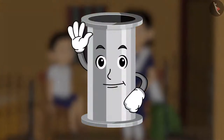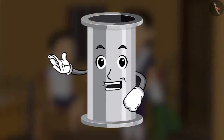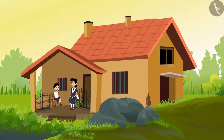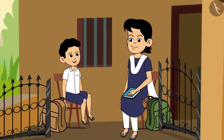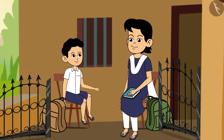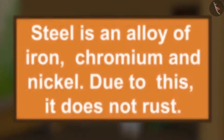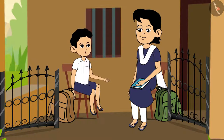There is also a layer of substance on iron pipes and taps in the house. A layer of zinc is put on them — this is called galvanization — which prevents rusting. Steel utensils are also made of iron, but rust is never seen on them because steel is an alloy of iron, chromium, and nickel, which prevents it from rusting.